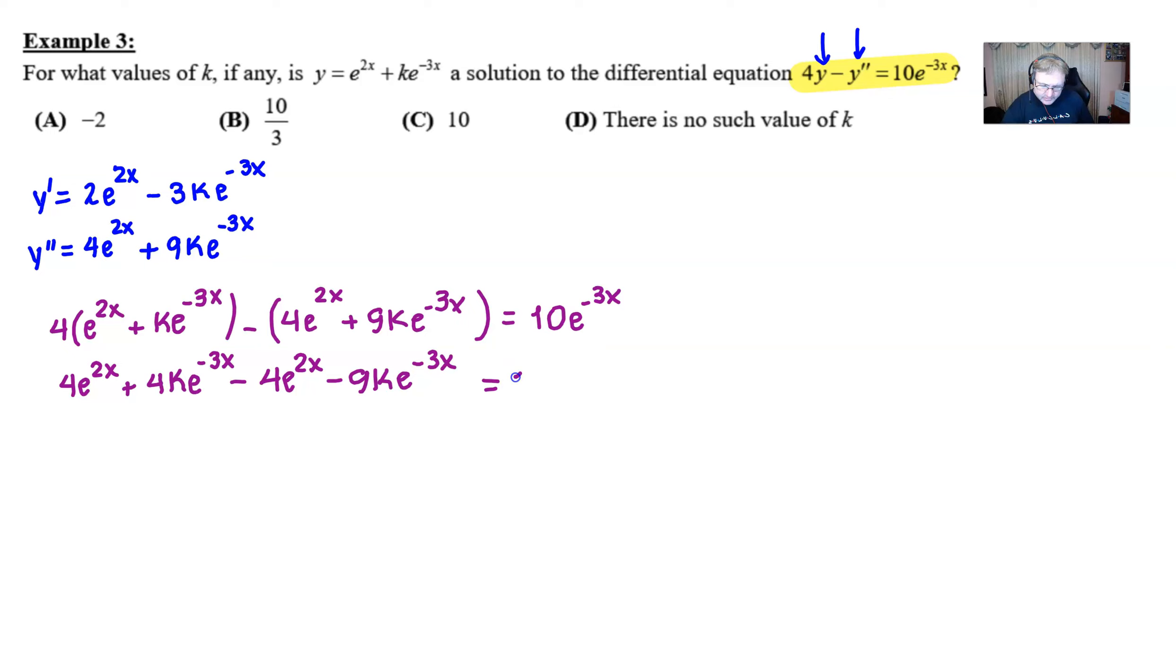All that, we're still hoping, is equivalent to 10e to the negative 3x. And we know it's going to be equal. We're just going to find the k that makes that possible. Well, something is about to happen. We have cancellation between those two terms. So, that simplifies things a little bit.